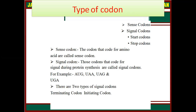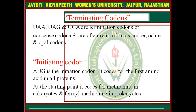For example, AUG, UAA, UGA, and UAG. There are two types of signal codons: terminating codons and initiating codons. UAG, UAA, and UGA are the termination codons, and the initiating codon is AUG.